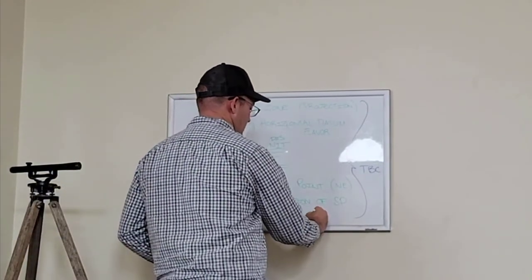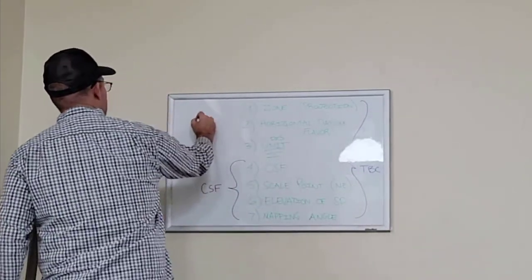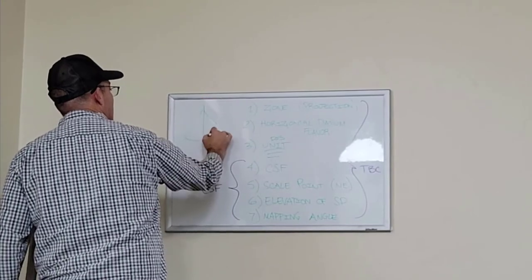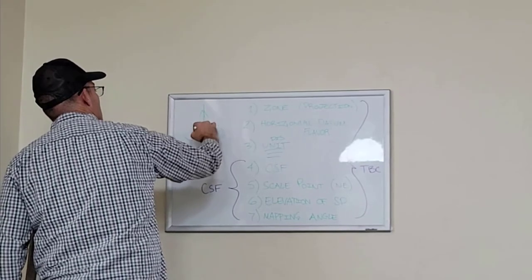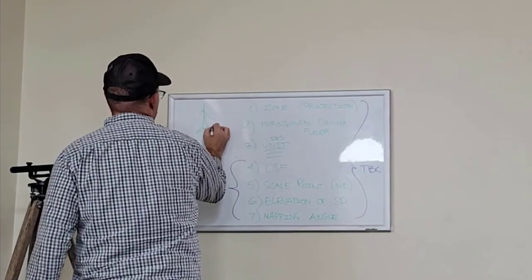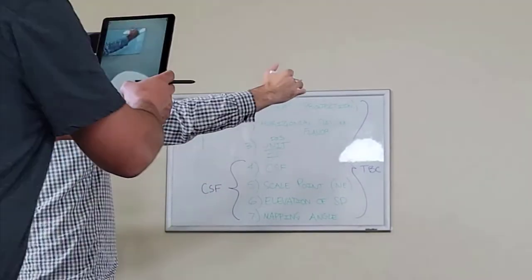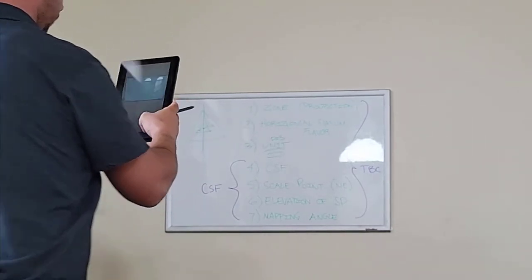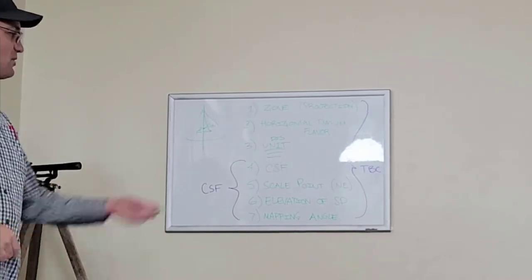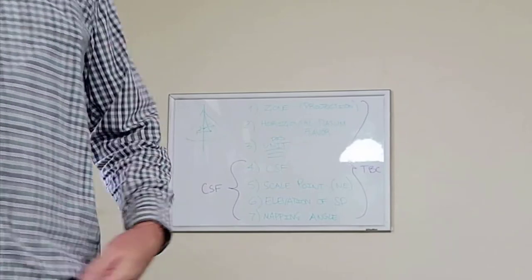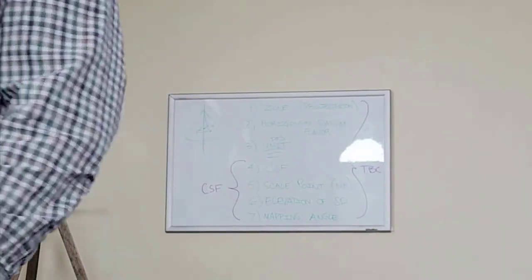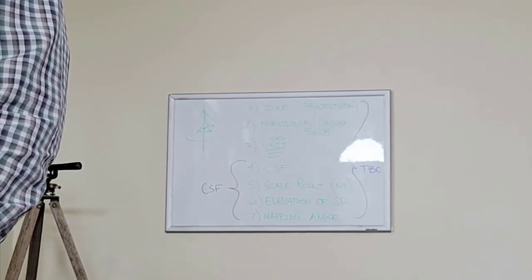The mapping angle is the angle between true north and grid north, which shows how your project area diverges from the central meridian. As you go east and west away from the central meridian, your mapping angle gets larger. It's what we show in our control diagrams. By the way, they're getting rid of US survey feet and bringing in all new datums and projections — everything is going to change. So if we're in grid, that information must be on the work product — plat, legal, whatever. Most surveyors don't know that, but it's in the California Public Resources Code.